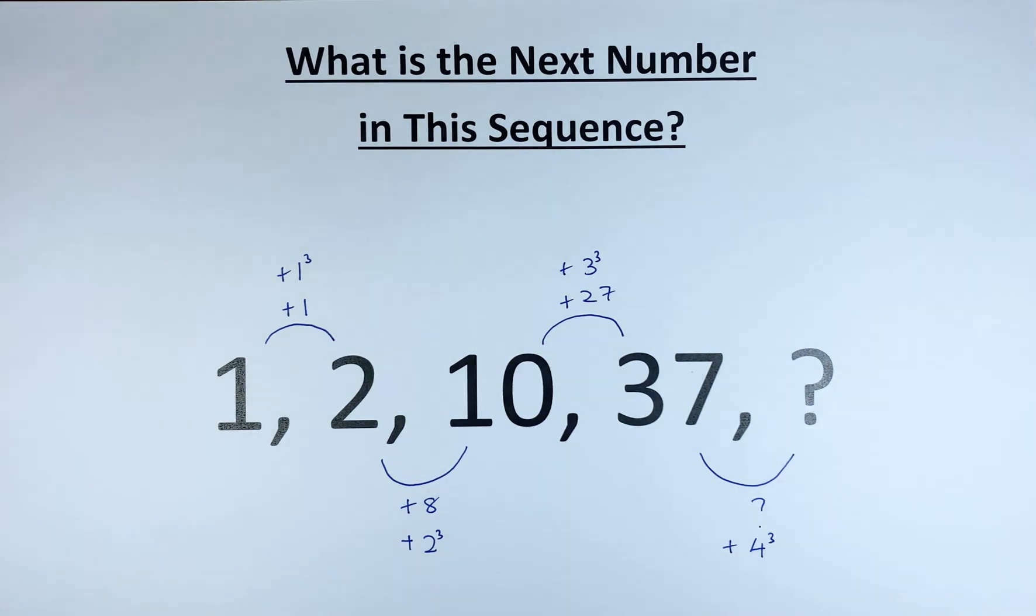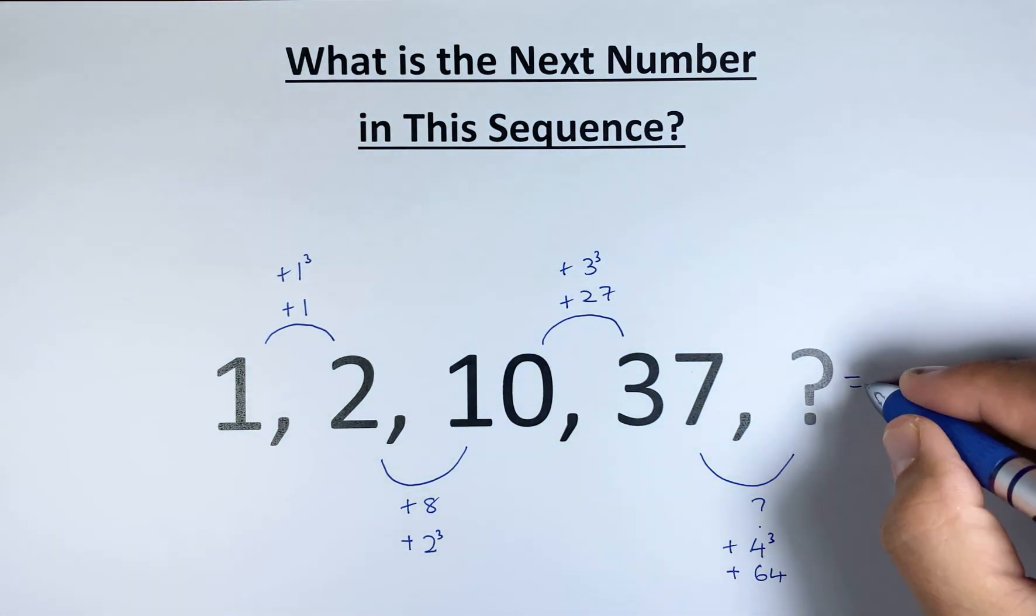4 cubed is actually equal to 64. So we add 64. Therefore, 37 plus 64, and the answer is 101.